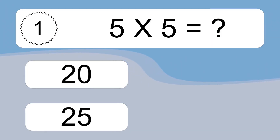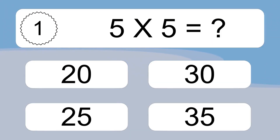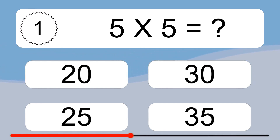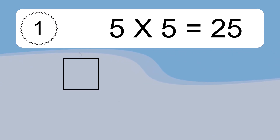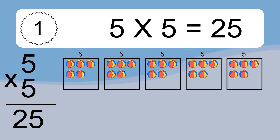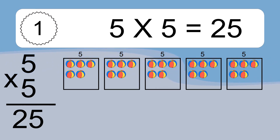5 times 5 equals what? 5 times 5 equals 25. We have 5 boxes, and each box has 5 colorful balls inside. If you count all the balls in all the boxes together, you will have 5 times 5 balls. This equals 25 balls.